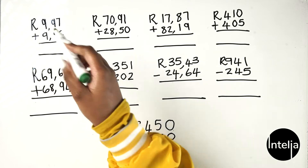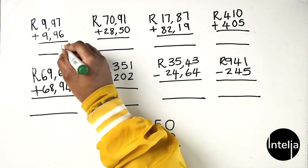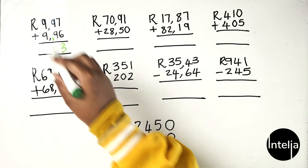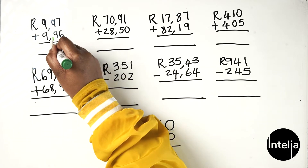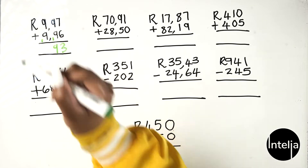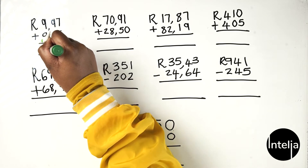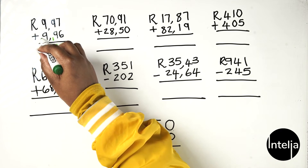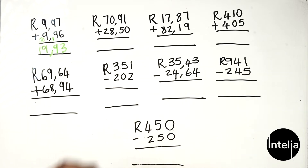So 7 plus 6 is 13 — write down your 3, carry the 1. Then 9 plus 9 is 18, plus 1 is 19 — write down your 9. Don't forget your comma to separate the cents from the rands. Then 9 plus 9 is 18, plus the carried 1 is 19. So your answer would be 19 rand 93 cents.